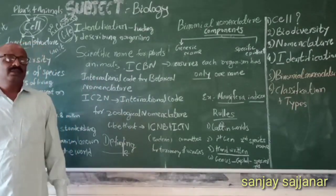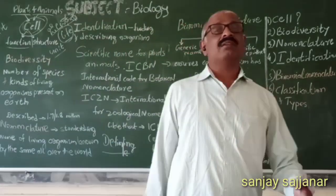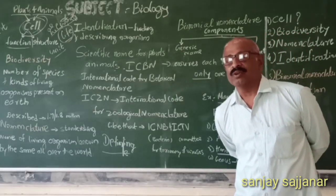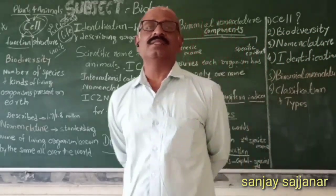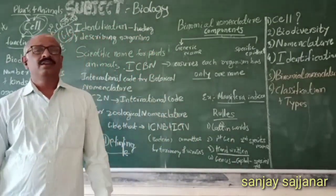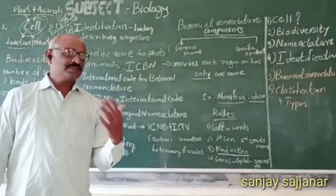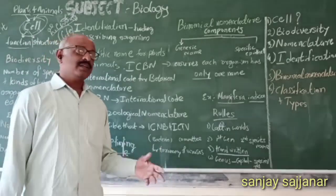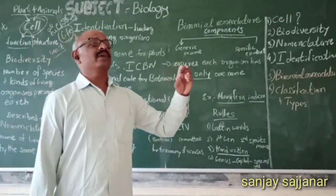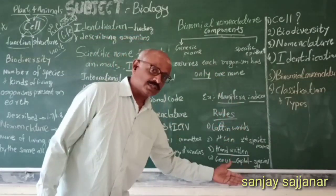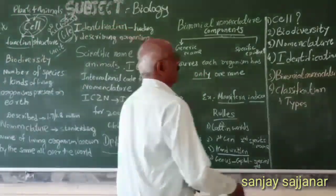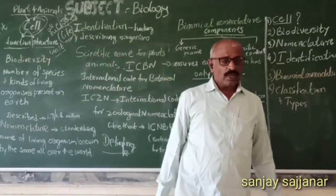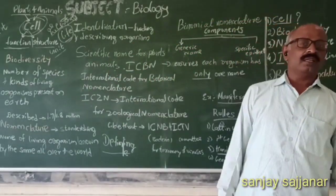In the last class we explained the characteristics of living organisms, comparing with non-living things. If the comparison is not explained, we can characterize or explain the living organism. When we are saying something is having a life, it has some characteristics. As we said, the cell is the structural and functional unit of an organism, and we are going to be discussing the cell as a separate unit.